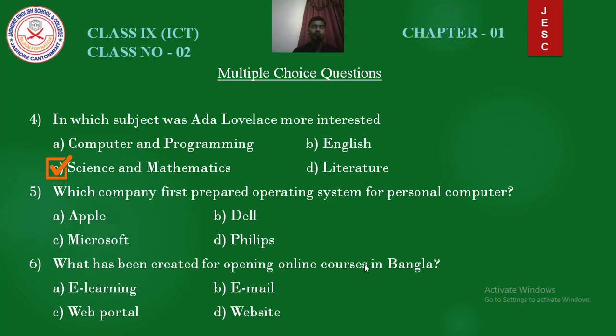Question number 5: Which company first prepared the operating system for personal computer? Options: Apple, Dell, Microsoft, Phillips. Answer is Microsoft. Question number 6: Which has been created for opening online courses in Bangla? Options: e-learning, email, web portal, website. Answer is web portal.